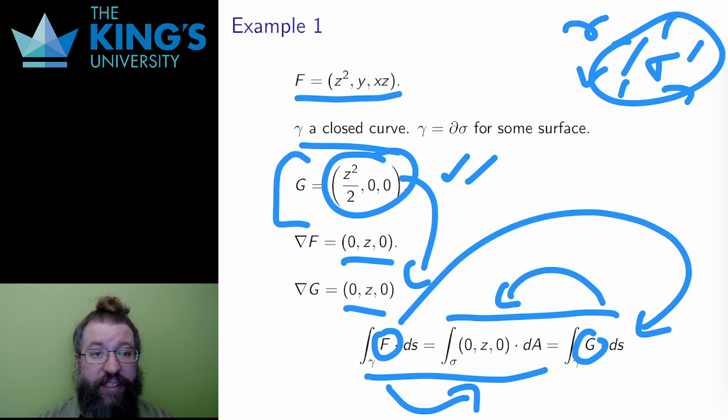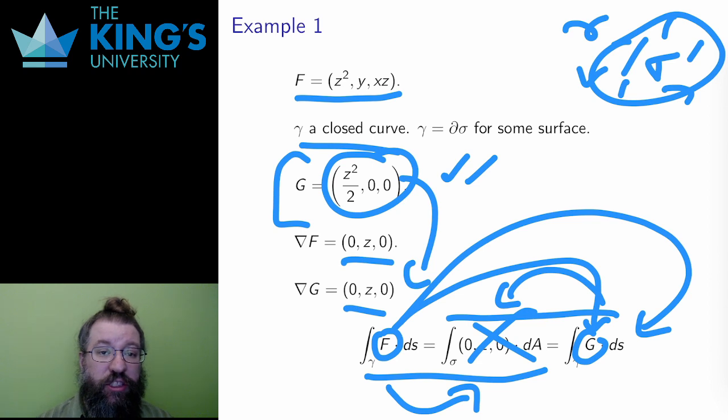And in doing this, I don't actually need to calculate anything about the surface or the flux integral to make this conclusion. I just need to know that that surface exists. So Stokes can let me change the field for a line integral over a closed surface as long as I change to a field which has the same curl as the original. And that's pretty clever.